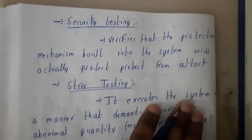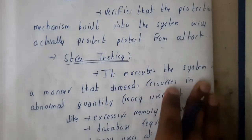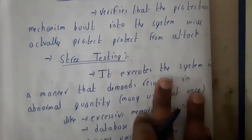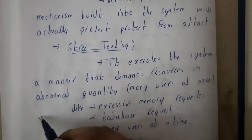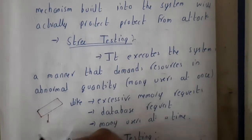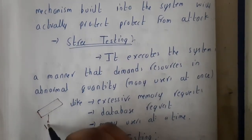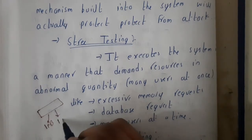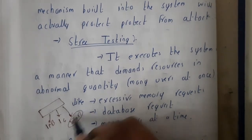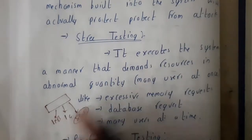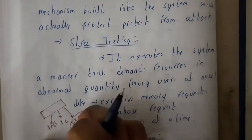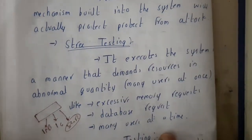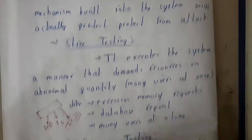After that comes stress testing, which executes the system in a manner that demands resources in an abnormal way. For example, an application that initially requests 1 MB of main memory, then suddenly jumps to 1 GB, then to 8 GB — occupying the entire available memory. These kinds of abnormal resource demands can lead to a crash of the operating system or the software. You need to test what happens with excessive changes in memory, database requests, or the number of users.